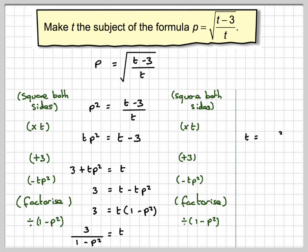So I've made t the subject. Maybe you might write it that way around: t is equal to 3 over 1 minus p squared.